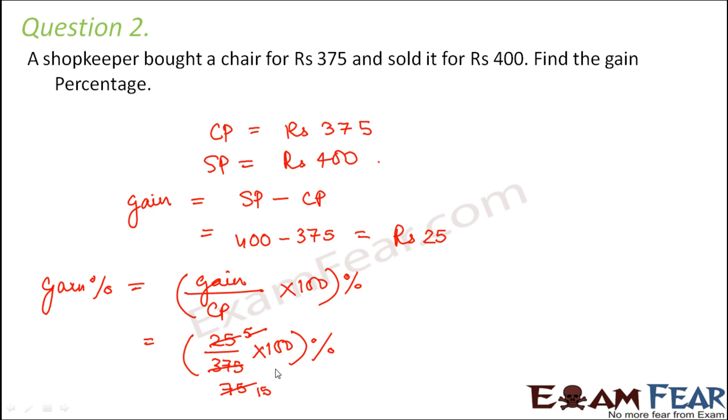Then 5, 15 is a 75. So 100 divided by 15% which is nothing but 6.66%. So this would be the gain percentage.